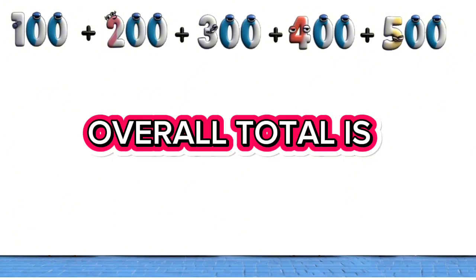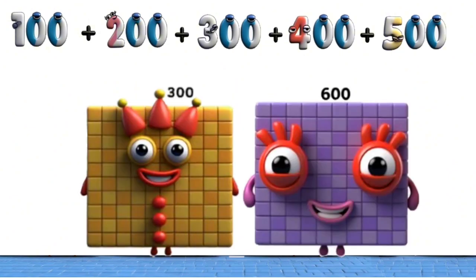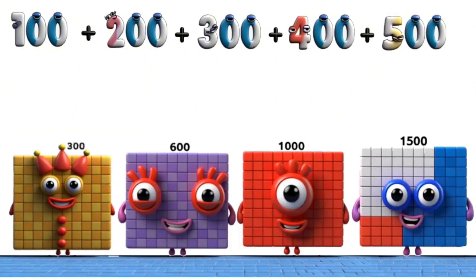100 plus 400 equals 300. Running totals: 600, 1,000, 1,500.